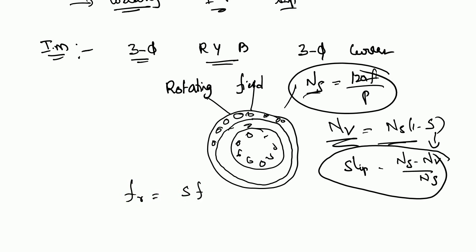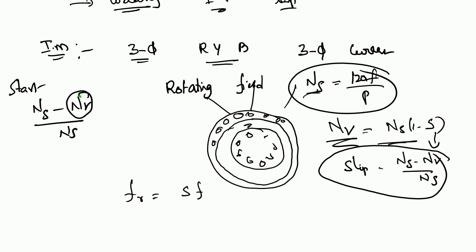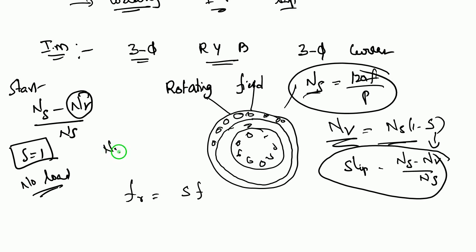Slip conditions: at starting, the rotor speed N_r is 0, so slip s equals 1 — this is the starting condition. At no load, the rotor speed N_r approaches N_s, so slip s equals 0 — this is the no load condition.